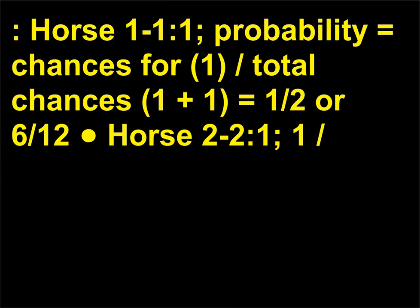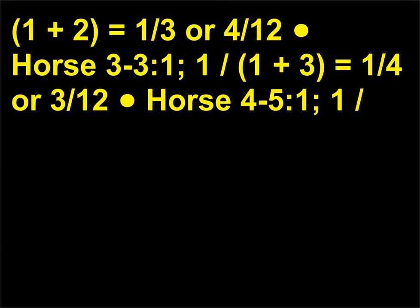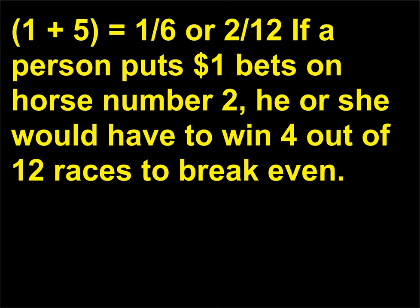Horse 1 at 1:1 — probability equals 1/(1+1) equals 1/2 or 6/12. Horse 2 at 2:1 — probability equals 1/(1+2) equals 1/3 or 4/12. Horse 3 at 3:1 — probability equals 1/(1+3) equals 1/4 or 3/12. Horse 4 at 5:1 — probability equals 1/(1+5) equals 1/6 or 2/12. If a person puts $1 bets on horse number 2, he or she would have to win 4 out of 12 races to break even.